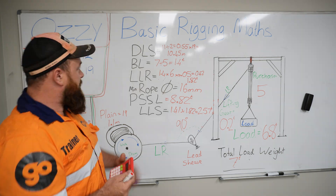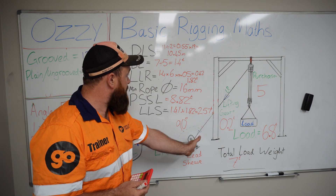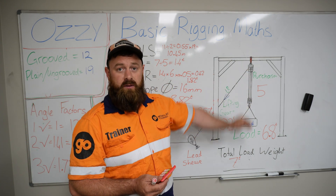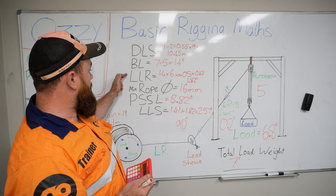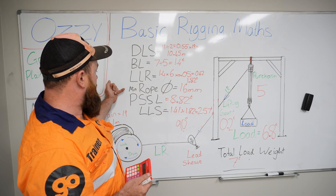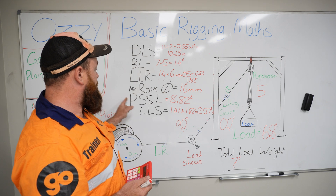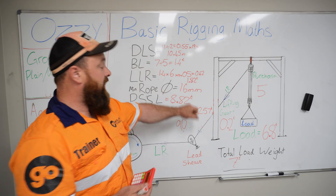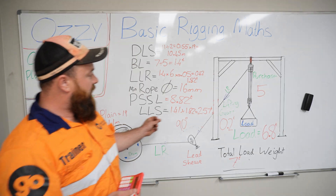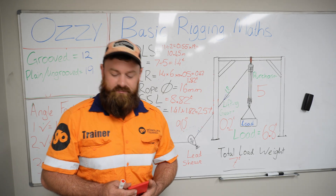So with this information: our distance to the lead sheave needs to be 10.45 metres; our Beckett load is 1.4 tonnes per rope supporting the load; the load in the lead rope is 1.82 tonnes after going through all the sheaves; our minimum rope diameter needs to be 16mm steel wire rope; our purchase support sling load is 8.82 tonnes; and the load in the lead diversion sheave is 2.57 tonnes.